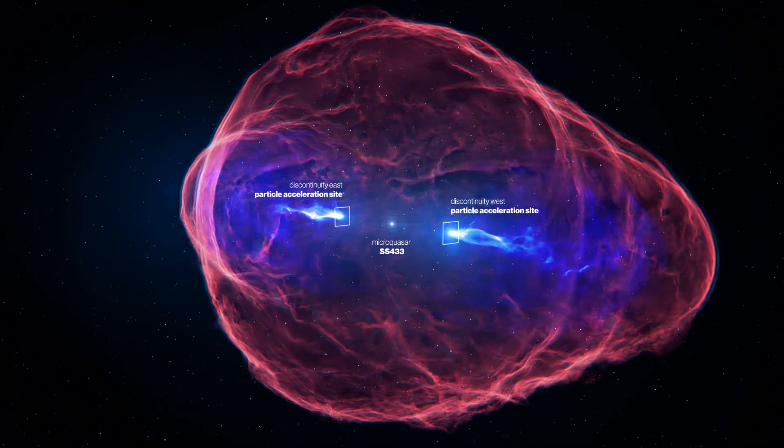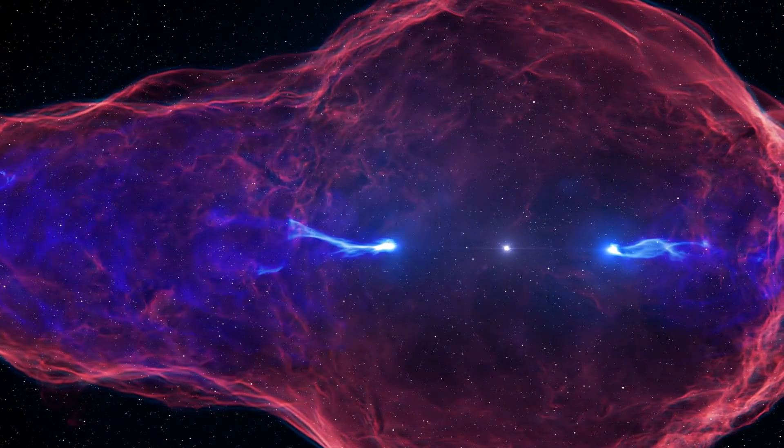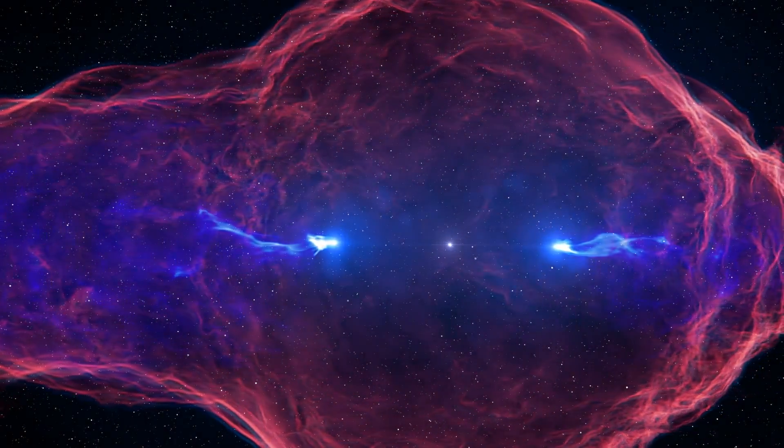The jets reappear as bright X-ray and gamma-ray sources, due to the presence of a strong shock in the collimated flow.